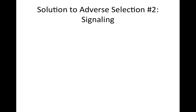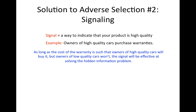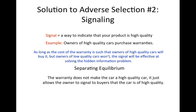A second solution to the adverse selection problem is to create a way to signal that a product is of high quality. For example, the owner of a high-quality car could purchase a warranty to signal that the car is of high quality. As long as the cost of the warranty is such that only owners of high-quality cars will choose to purchase it, the signal will be effective at solving the hidden information problem. This type of equilibrium — where owners of high-quality cars purchase the signal but owners of low-quality cars do not — is called a separating equilibrium. Note that the signal does not make the car a high-quality car; it is simply an indicator of quality that was present before the purchase. Thus, the signal provides what is known as a sheepskin effect.